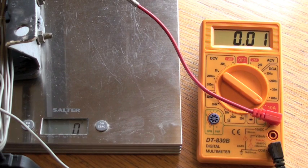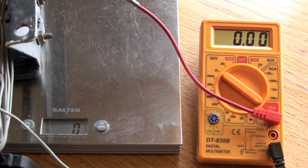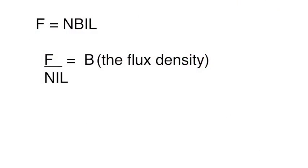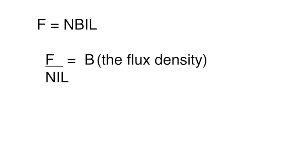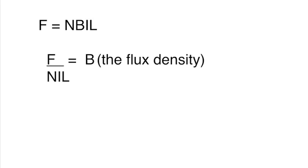Before we substitute all these values into the equation, we'll rearrange it so that the flux density is the subject of the equation. The quantities N, I, and L therefore transfer from the top on the right-hand side to the bottom on the left-hand side.